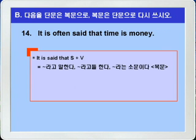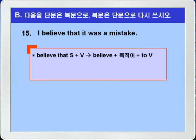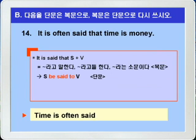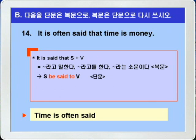14번. 'It is often said that time is money.' 'It is said that 주어+동사'는 주어 be said to 부정사로 바꿔 쓸 수 있습니다. 주절과 종속절의 시제가 모두 현재로 같으니까 단순부정사를 씁니다. 정답: 'Time is often said to be money.' 시간은 돈이라고들 종종 말한다.